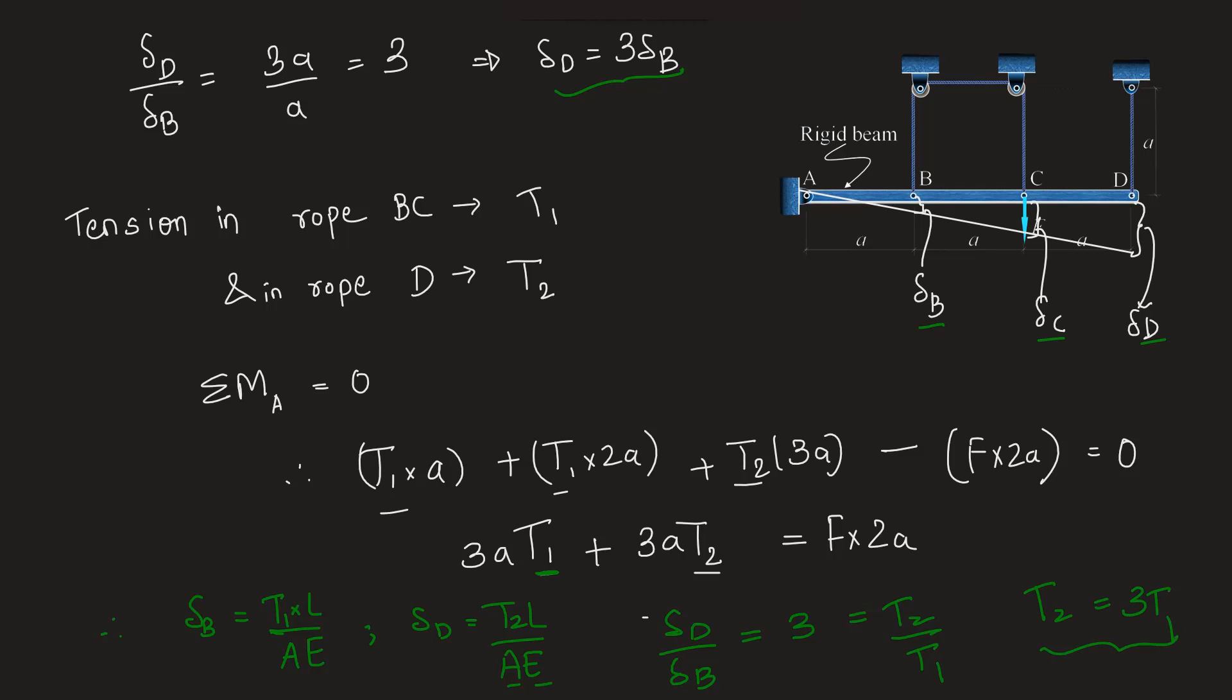Substituting this value in this equation that we got from the moment equilibrium, we will have in the place of T2 we will substitute 3 times T1. So we have 3A T1 plus 9A T1, which is 12A T1. But we can cancel out A from both sides. We will have 12 T1 will be equal to 2F, and therefore T1 will be equal to F by 6.